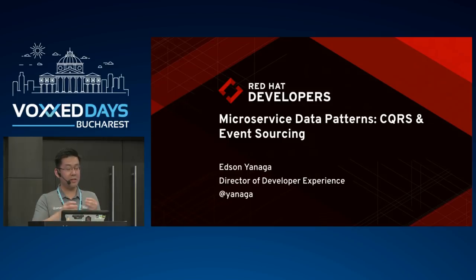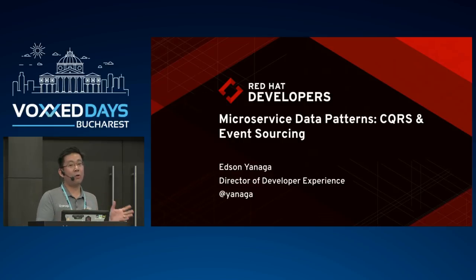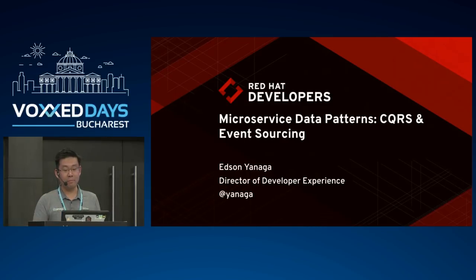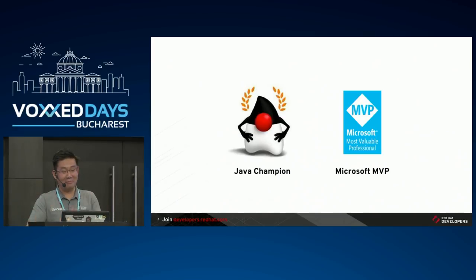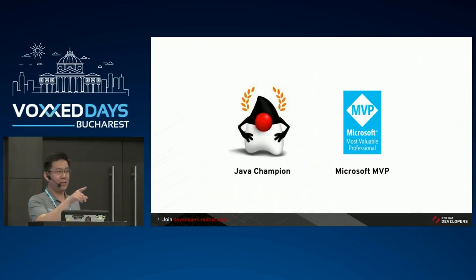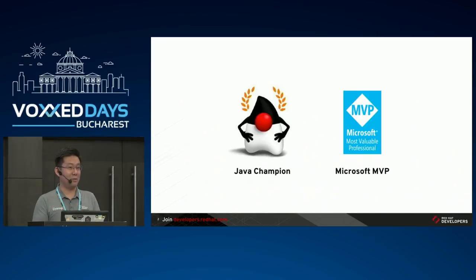I chose this topic specifically because I believe there is some confusion in the architecture community - when do you apply these patterns, or what is this or that? I think it would be useful to make some concepts clearer for us developers. I'm also a Java Champion and a Microsoft MVP working for Red Hat. And I happen to be Brazilian-Japanese, which I bet makes me unique here in the audience.